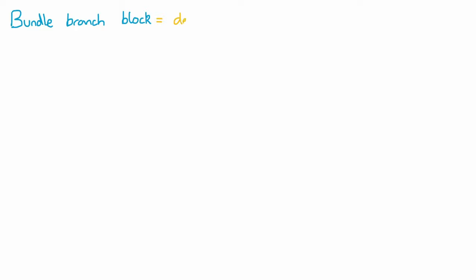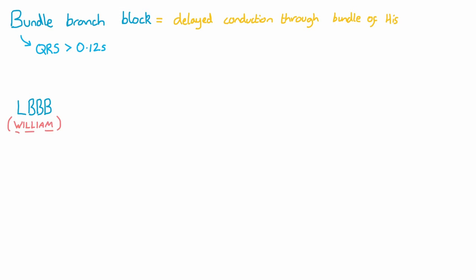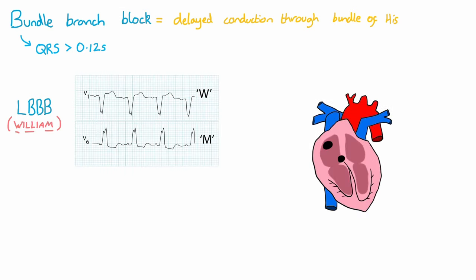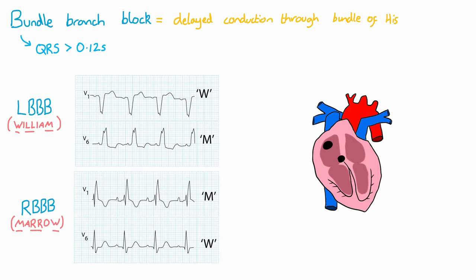Bundle branch block can also be a sign of ischemia, and represents the delayed conduction of depolarisation through the bundle of His. This can affect either the left bundle branch or right bundle branch. The ECG will show a wide QRS complex, i.e. more than 0.12 seconds, or three small squares. A left bundle branch block will show a W shape in V1 and an M shape in V6, which can be remembered using the name William. Right bundle branch block will give the opposite, with an M shape in V1 and W shape in V6, remembered by marrow.